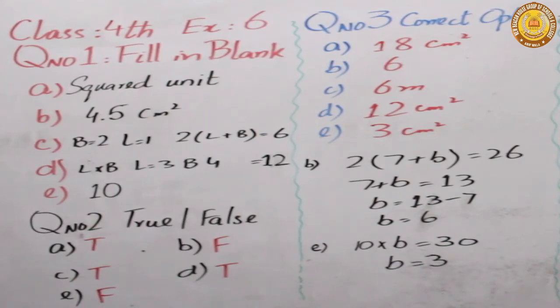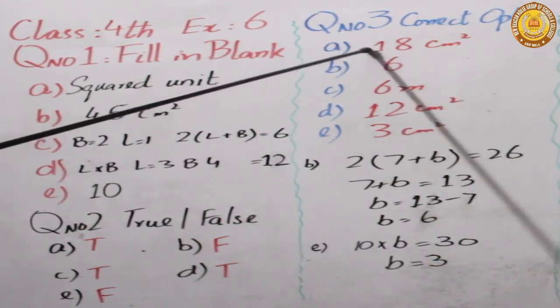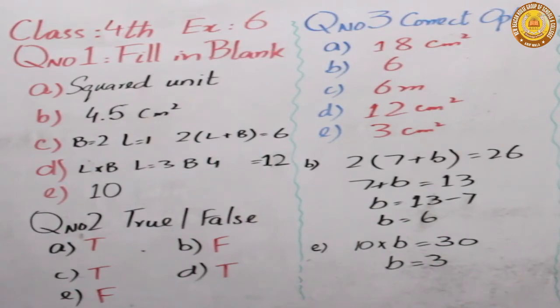Wahan par aap ne jo hai best option jo hai wo choose karni hai. Dekhein first pe hai if l is 5, b is 4, yaani ke length is 5, width is 4, the perimeter of the rectangle. Simple si baat hai hum ne formula rakha tha 2 length plus width jo ke perimeter hai. Agar 4 aur aap ko di hui hai 5, 4 plus 5, 9, 9 ko 2 se multiply karein ge to 18, yaani ke first aap ka 18 cm ke answer.